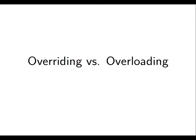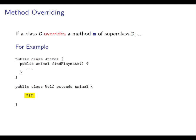We're going to say a bit about the difference between overriding and overloading because this is a topic that often confuses people. Let's think a bit more about what you have to do in order to be overriding a method of a superclass. We've got our Animal class again, and just for the sake of argument we've got a findPlaymate method in it this time, which is supposed to return an object of type Animal. How should Wolf be able to override that findPlaymate method?